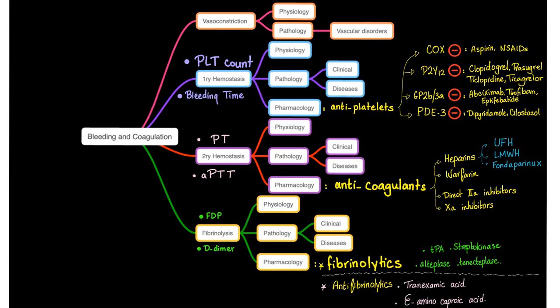You have vasoconstriction, primary hemostasis, secondary hemostasis, and fibrolysis. Primary hemostasis covers platelet formation — we have talked about the physiology, pathology, and pharmacology. How do you measure primary hemostasis? You have the platelet count, bleeding time, and platelet aggregometry. For secondary hemostasis, you have the PT, PTT, and TT. For fibrolysis, you have the FDP and the D-dimer.